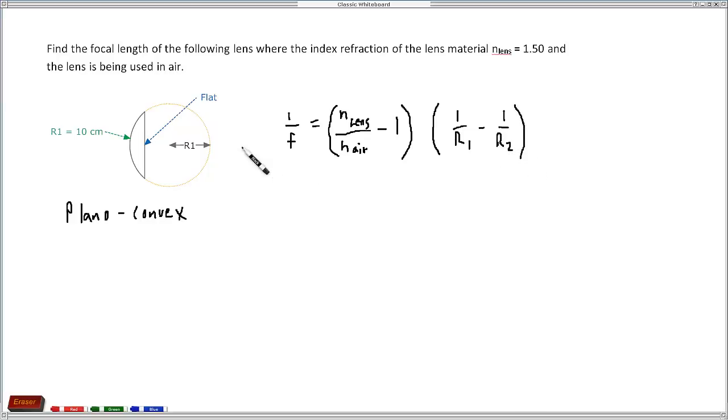The problem here is that we've only got an R1. We don't seem to have an R2, but in reality we do have an R2.